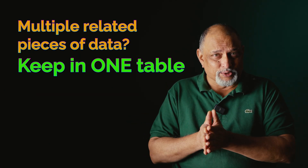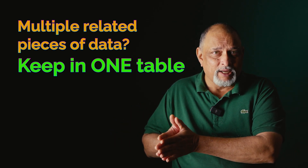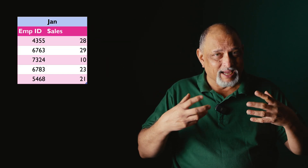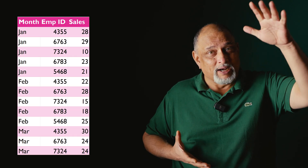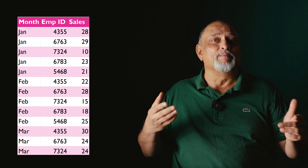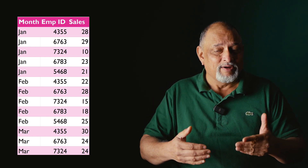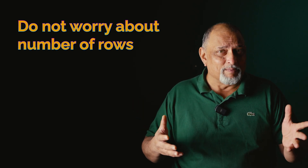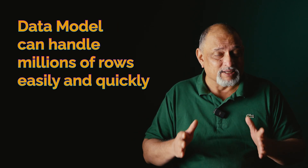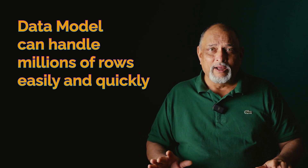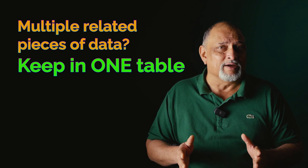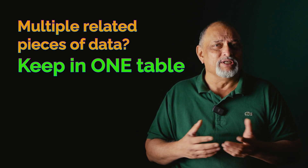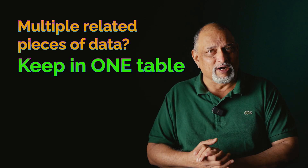Sometimes we get similar data in multiple pieces — for example, every month I get data. Jan data is there, I create a report, then I get Feb data and create a report. When there are pieces of similar data, you should combine them together in one massive raw data repository. Even if your reporting is required to be monthly, combine Jan with Feb with March and keep going. The Data Model doesn't have a limit of 1 million rows, is very fast, and reduces file size. To create a separate monthly report, you just filter on year and month. Multiple pieces of related data — combine them in master raw data.